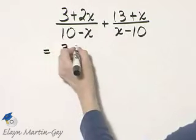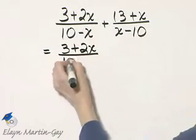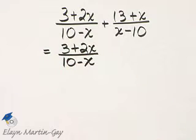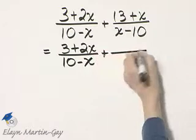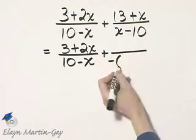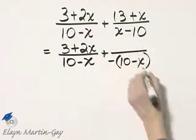I'll write that as—I'll go ahead and rewrite the first rational expression. It makes no difference which denominator you choose, but choose one and make it the opposite, and if it's the opposite, it is 10 minus x.